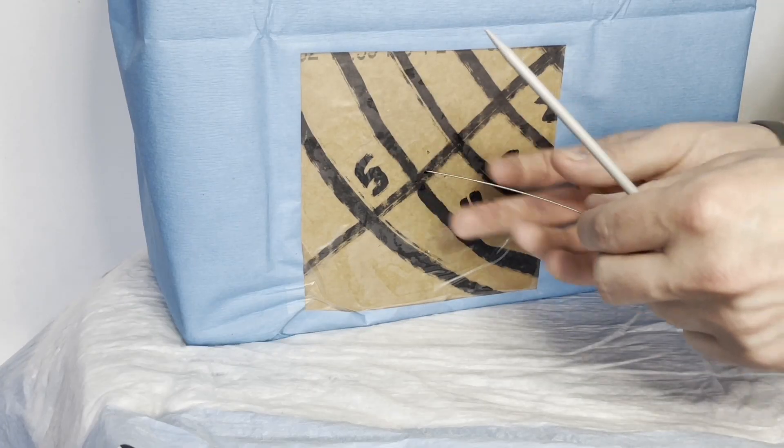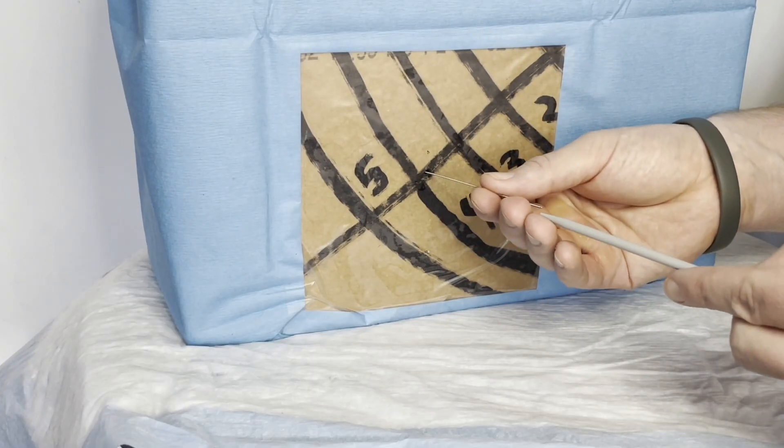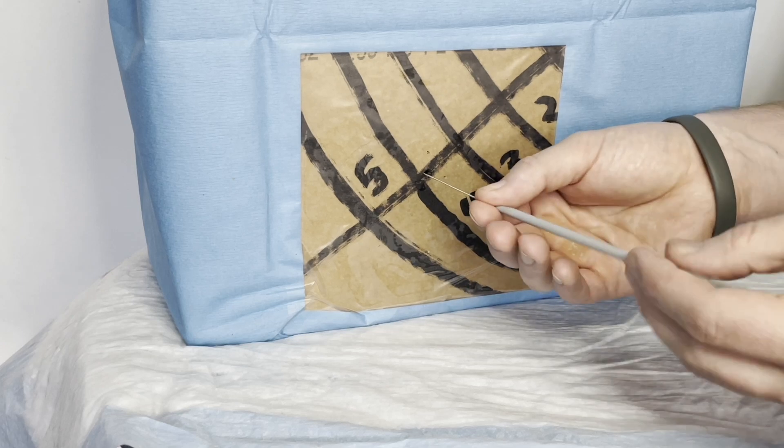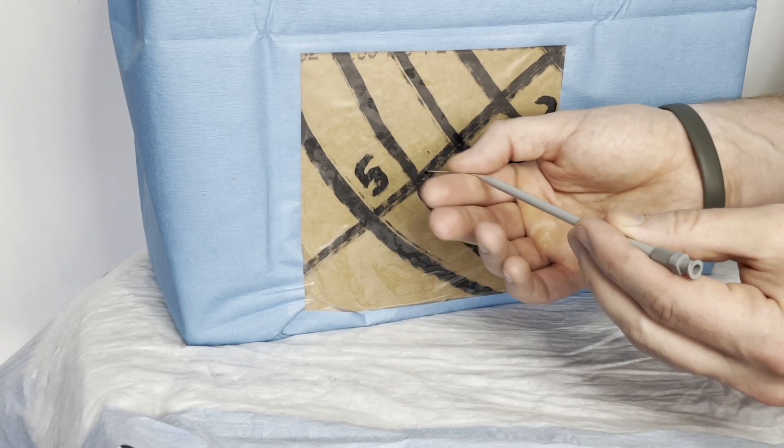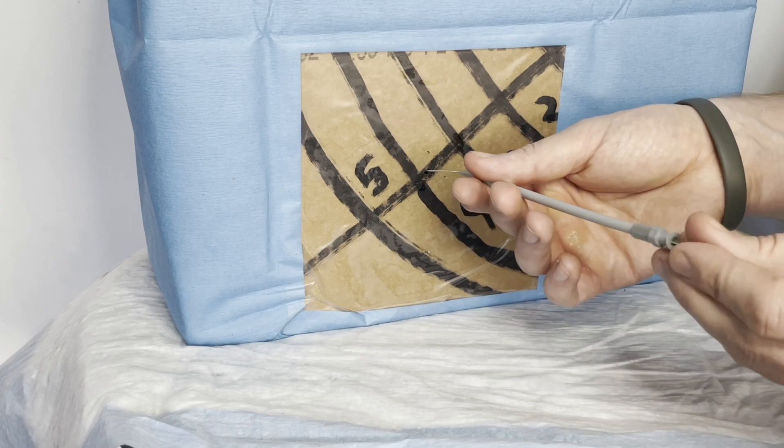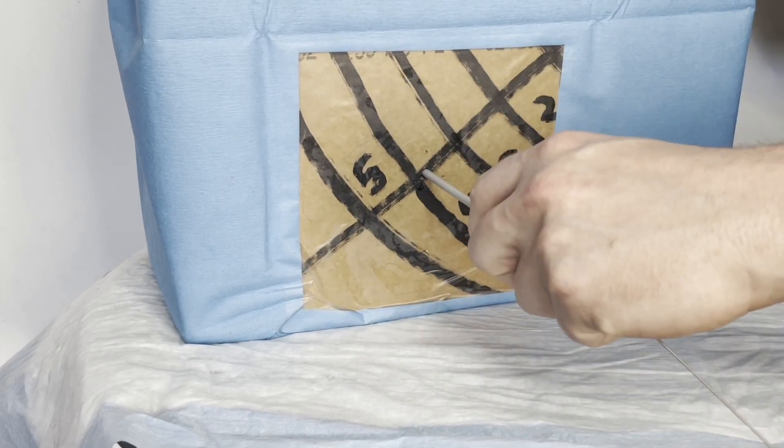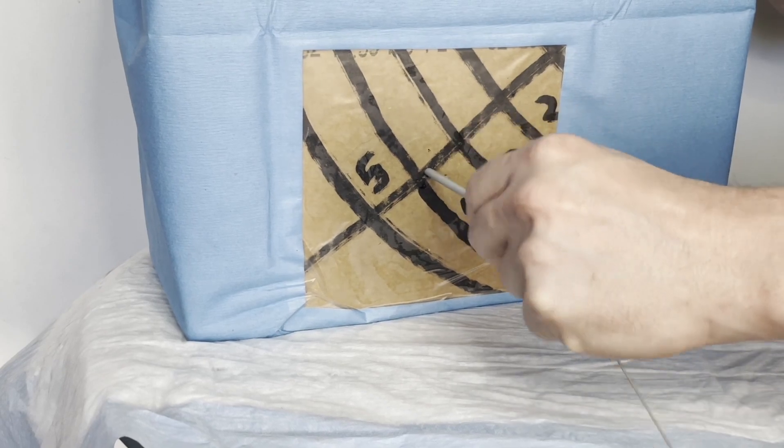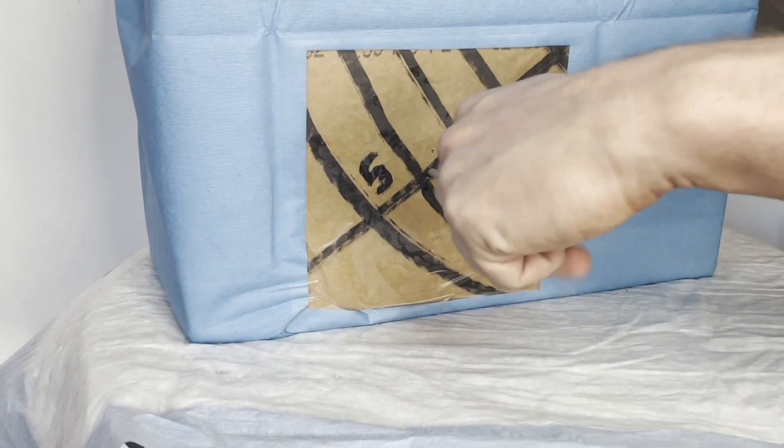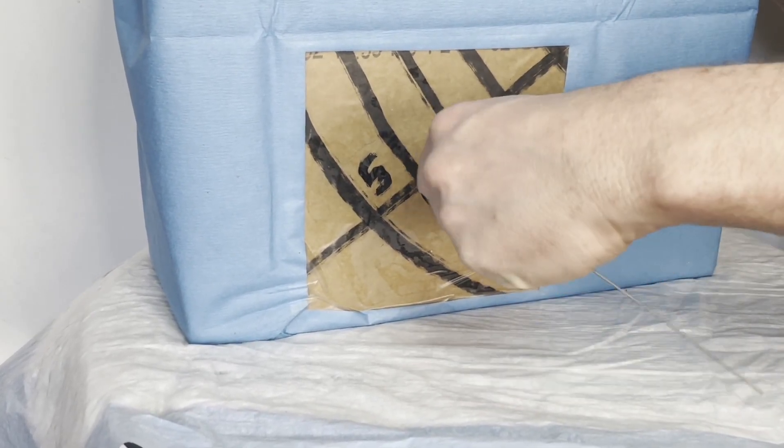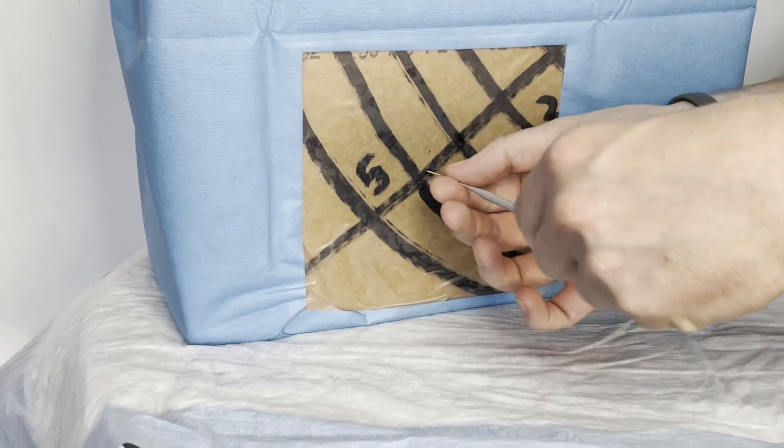Now that our stab incision is done, we've now created a hole big enough to dilate the area. We've grabbed our dilator. We're holding on to the guide wire. And now that we've got our dilator close to the skin, we want to push and twist the dilator. We're not going a full eight centimeters in; we're just going enough to create that pocket even bigger.